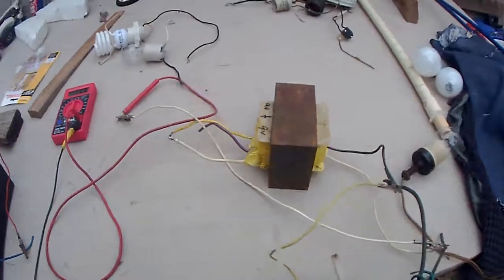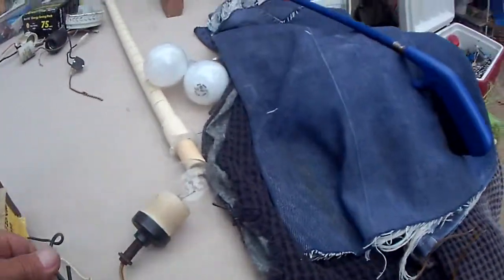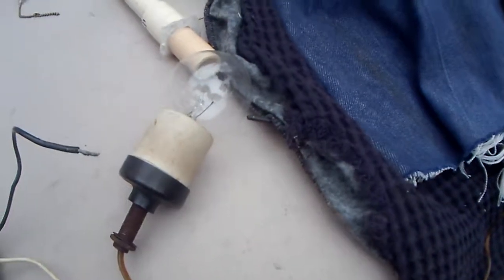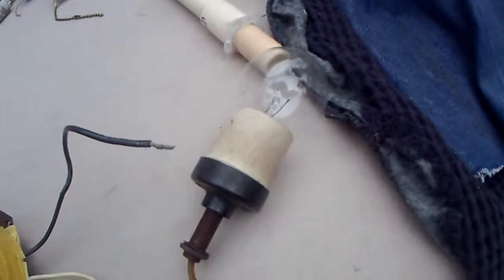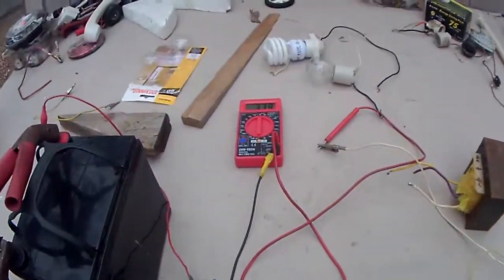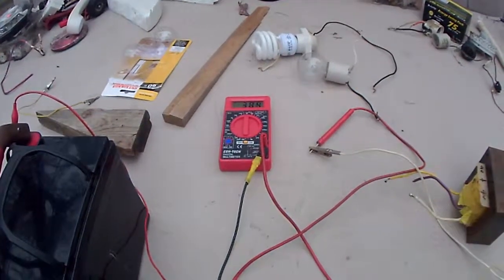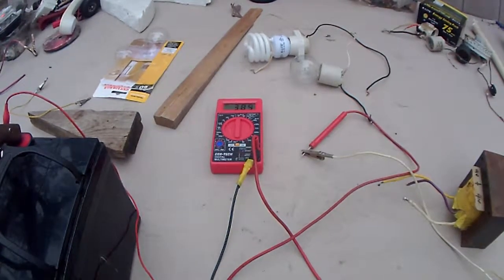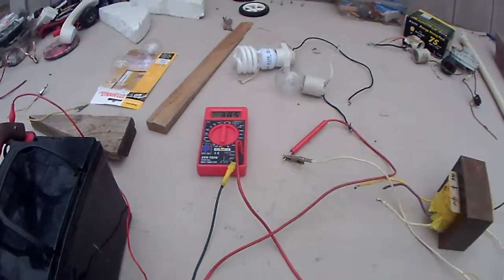211V hooked up to the transformer and then disconnected from the transformer - you get raw AC. That's what I thought: 385 volts AC.